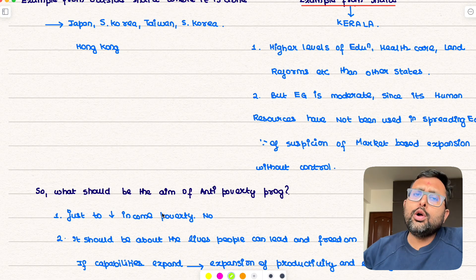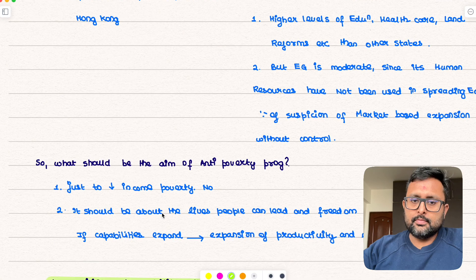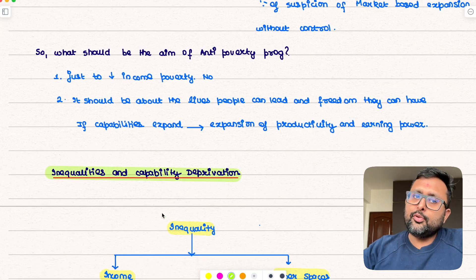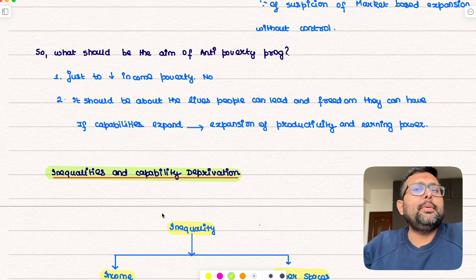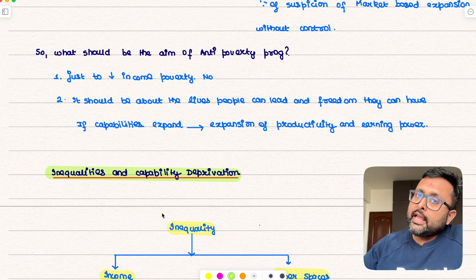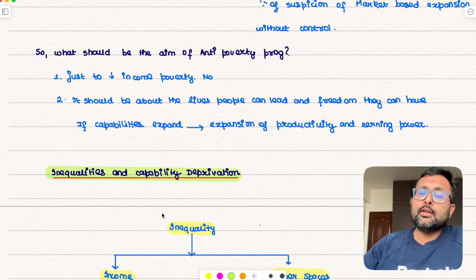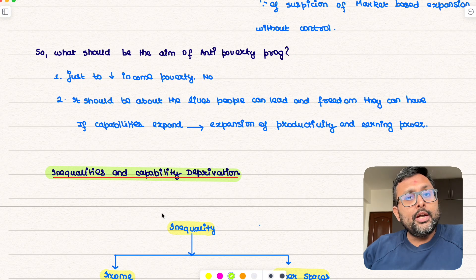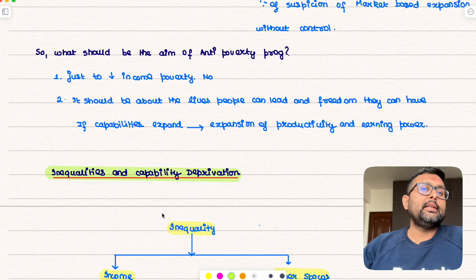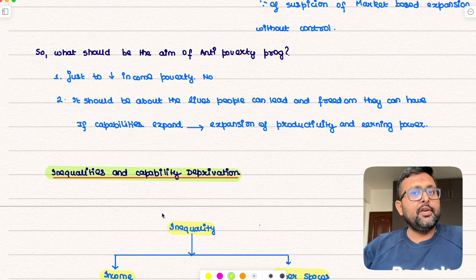And then he asked that what should be the aim of the anti-poverty programs. Think about it: the aim of the anti-poverty program is just to decrease the income poverty? No. Just to decrease the income poverty can't be an aim of the anti-poverty program. The main aim is that we should be able to provide the lives which people would want to live, freedoms which people value, and hence they start valuing their own lives which is going to increase their capabilities. And hence those enhanced capabilities are going to increase the productivity and the earning capacity of individuals. So that should be the aim.